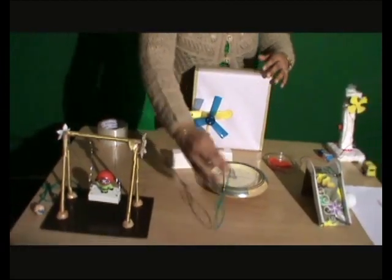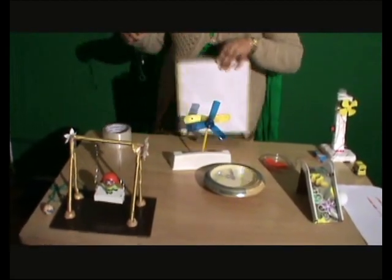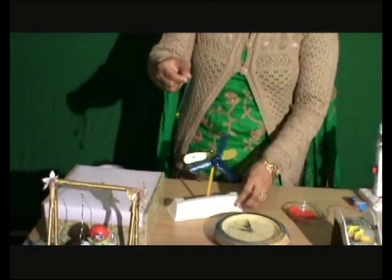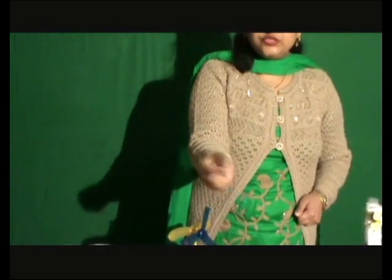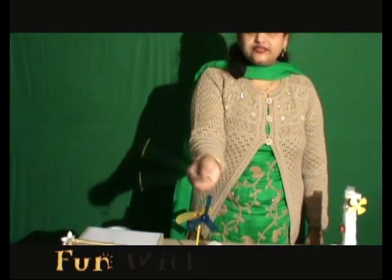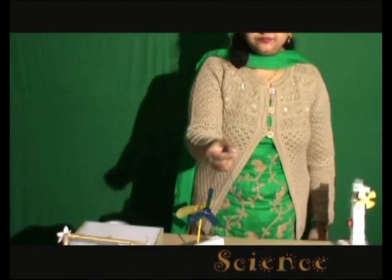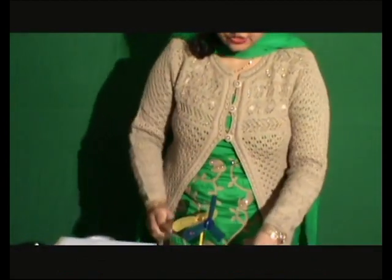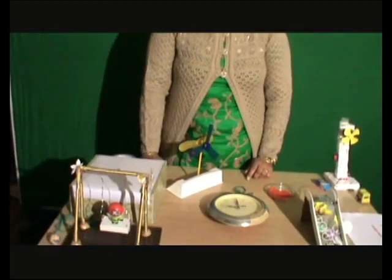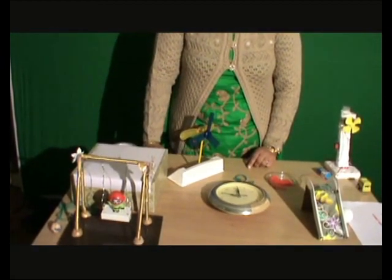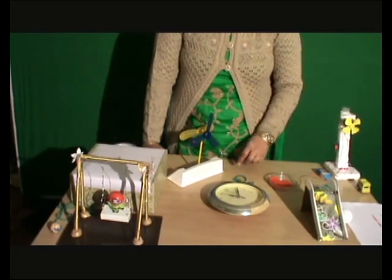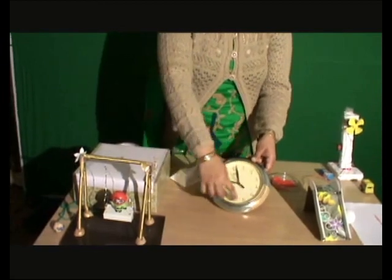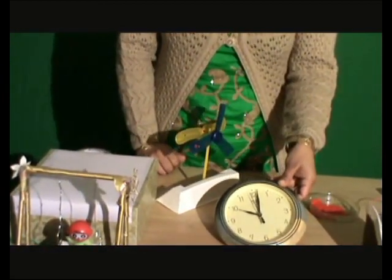Here is a bead which I have attached to a thread. If I rotate this bead, this motion is also an example of circular motion. So children, if an object is moving around a fixed point called the axis in a circular path such that it covers equal distances at all points, that kind of motion is called circular motion.